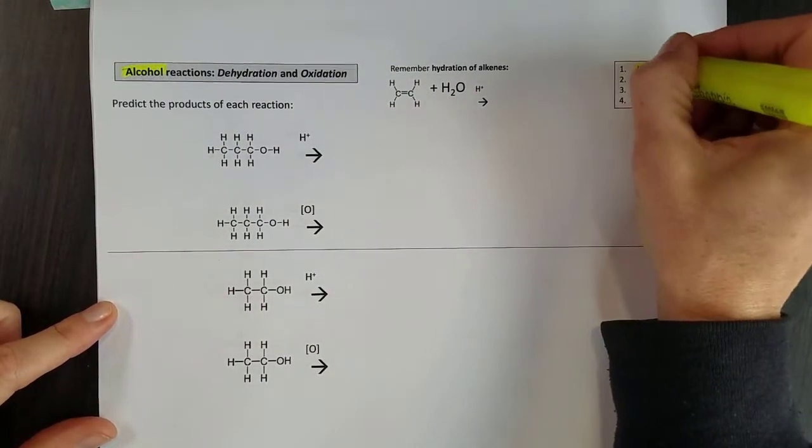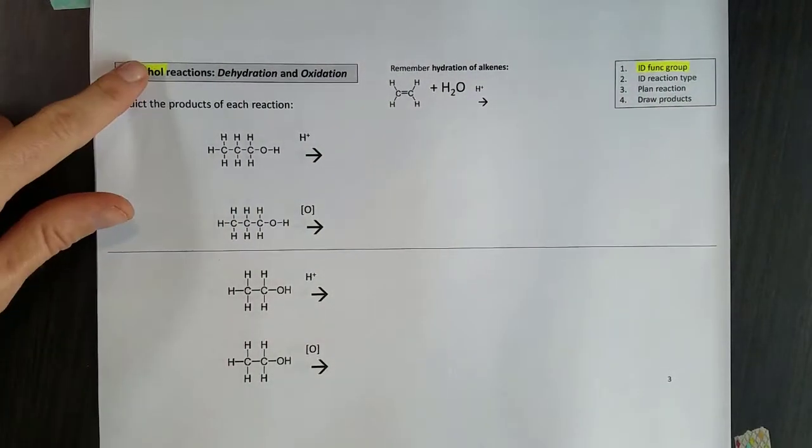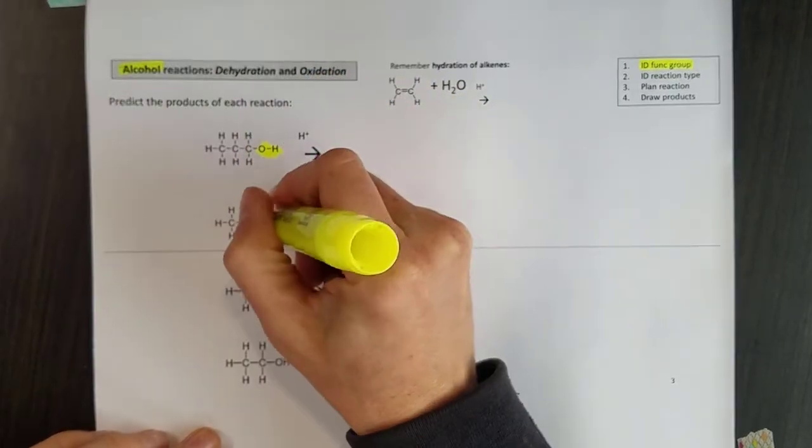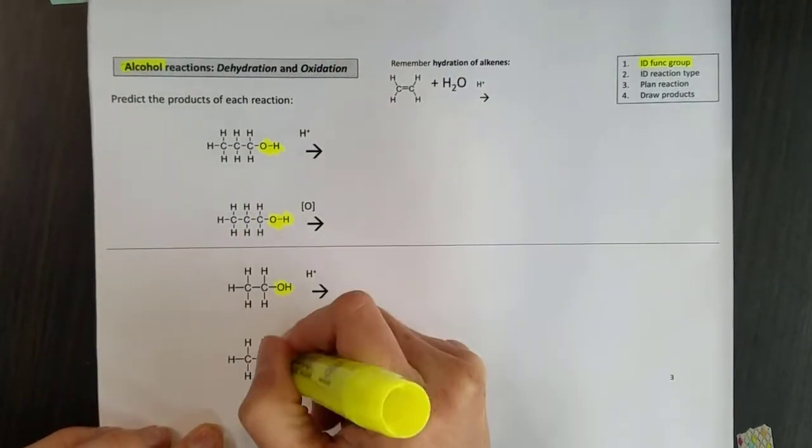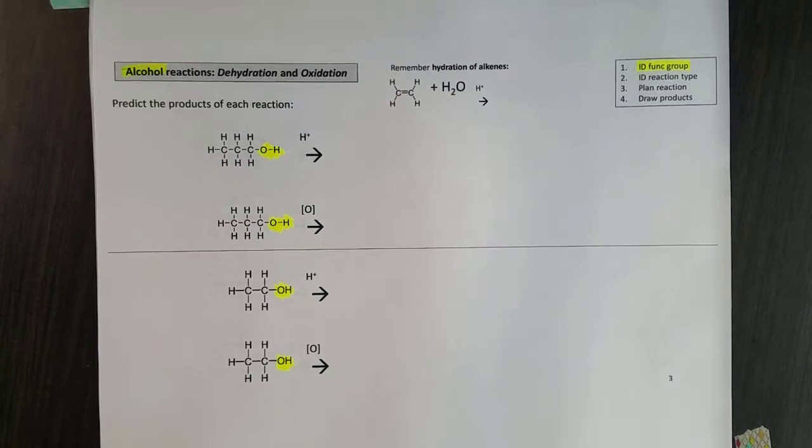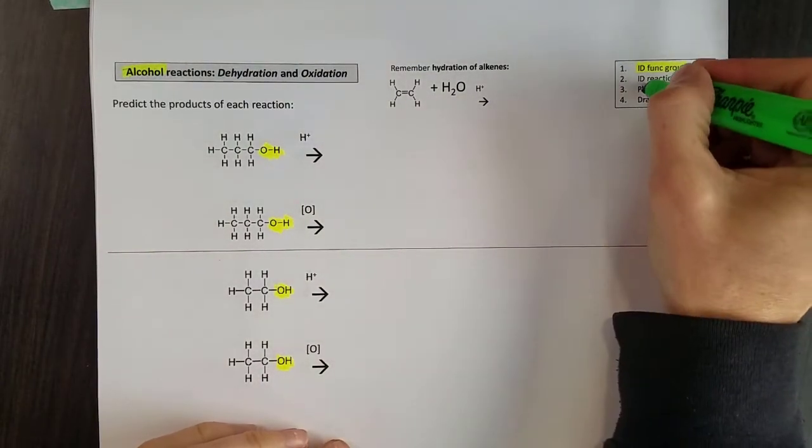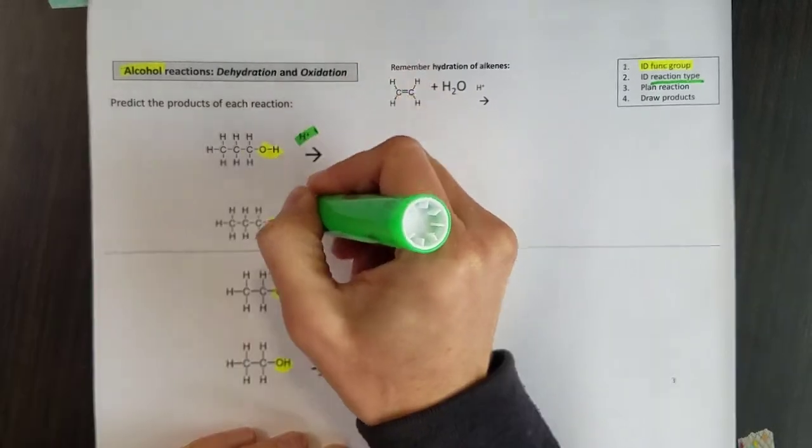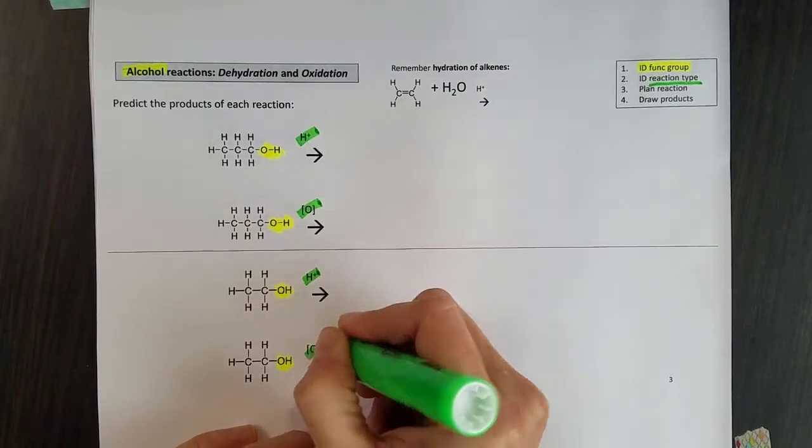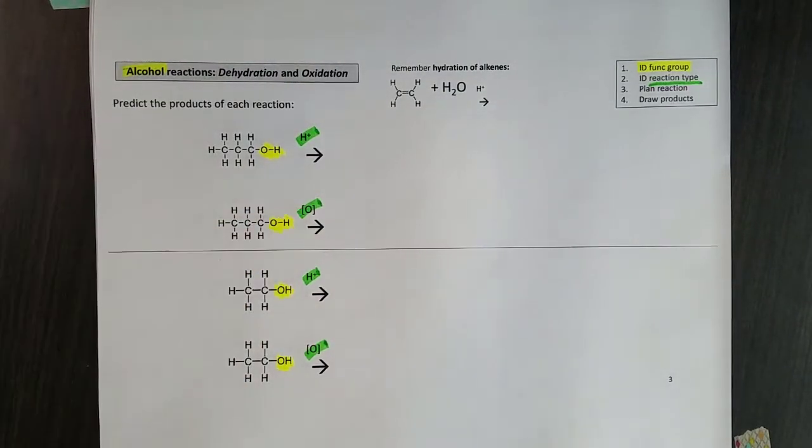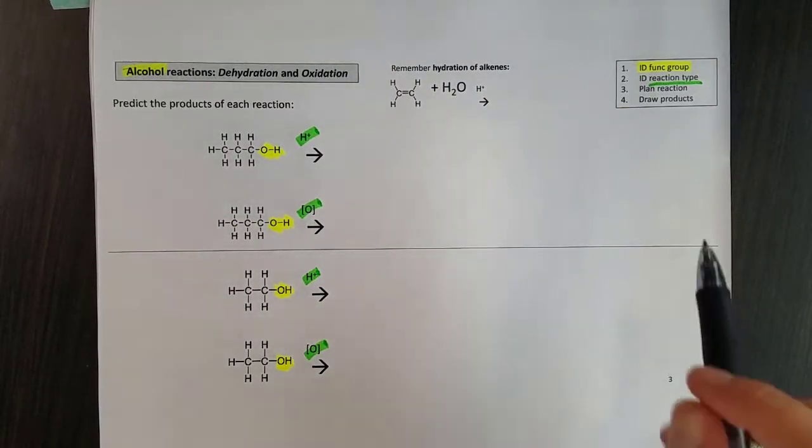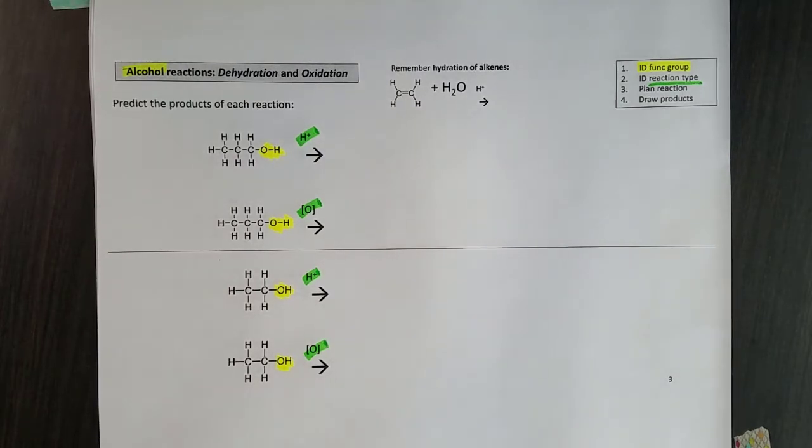First, identify the functional group, so that will generally be an alcohol. These will later be mixed together so you want to be able to pick them out. You want to identify the reaction type and that will often come from what's over the arrow here. Once you've done that you want to think, plan out what you're going to do, and then draw your products.